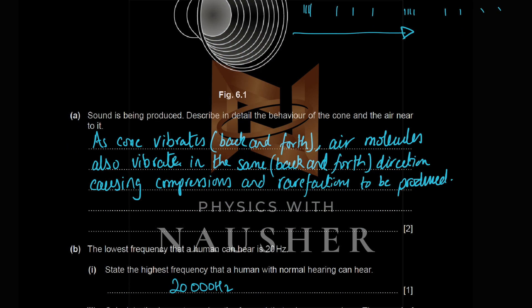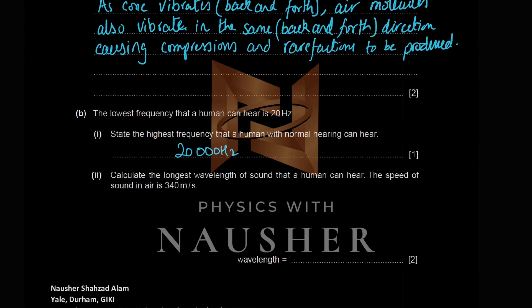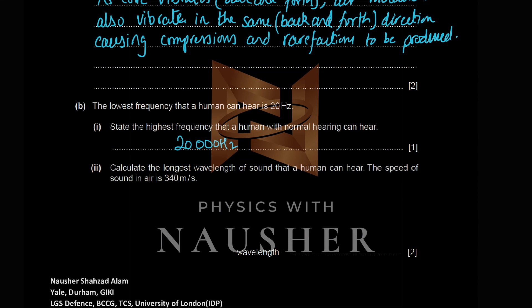The highest frequency a human can hear is 20 kHz. For the longest wavelength, use the smallest possible frequency. Using v = fλ: speed is 340 m/s, frequency is 20 Hz (the lowest), so λ = 340/20 = 17 meters.